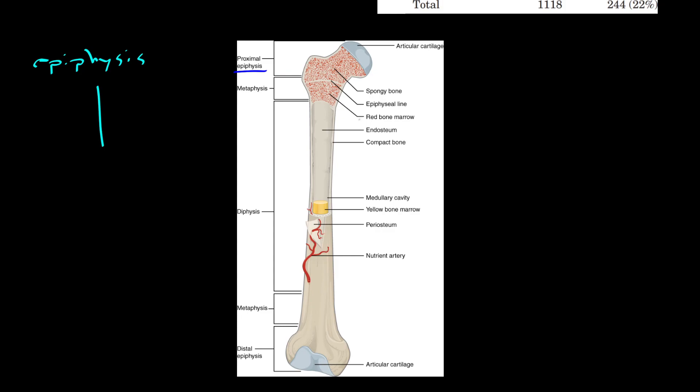Epiphysis is the end. And then in the middle, you've got the diaphysis. This all applies, by the way, to long bones in particular. So the diaphysis is the long, narrow, skinny part in the middle of the bone. Then the epiphysis is the end where it attaches to the joints, whatever joints it's plugged into.